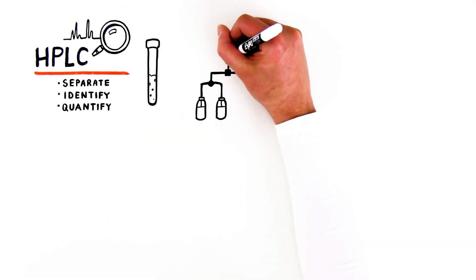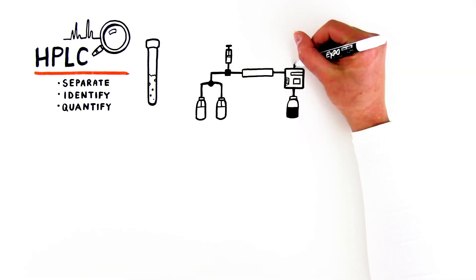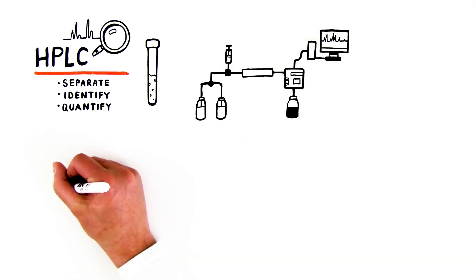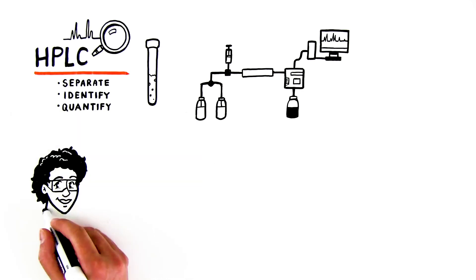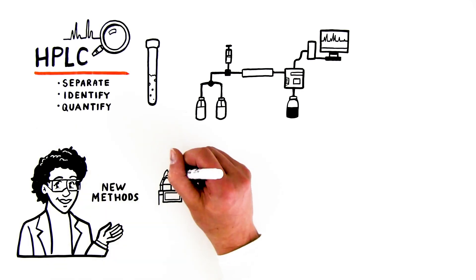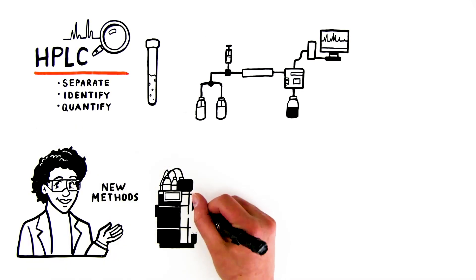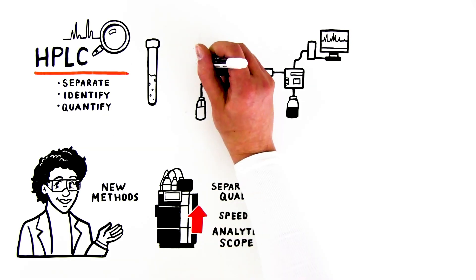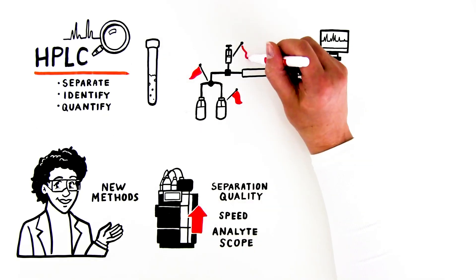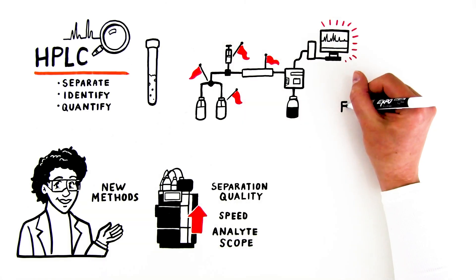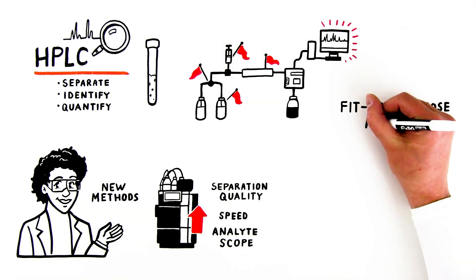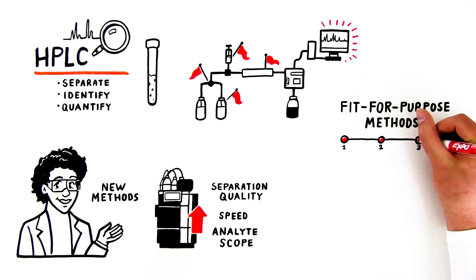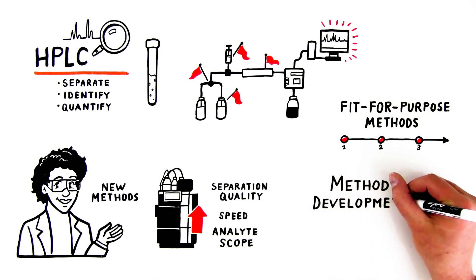Dedicated methods are required to achieve adequate separation for different sample or analyte types. Method development can be used for creating entirely new methods or for updating existing methods to improve separation quality, speed, or analyte scope. Because many factors impact the quality of HPLC analyses, the creation of fit-for-purpose methods requires a systematic approach. This process is called method development.